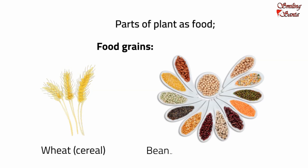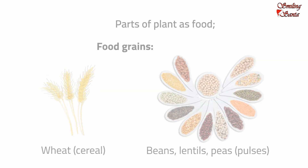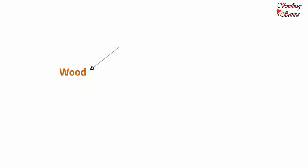Dried beans, lentils and peas are the most commonly used pulses. We get wood from trees like oak, teak, maple, pine, mahogany and cherry.